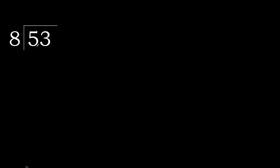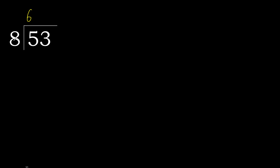53 divided by 8. 5 is less, therefore next. 53 is not less, so with 53: 8 multiplied by which number is nearest to 53 but not greater? 8 multiplied by 7 is 56, which is greater. Multiplied by 6 is 48, which is not greater. Subtract: 53 minus 48 is 5. Next digit.